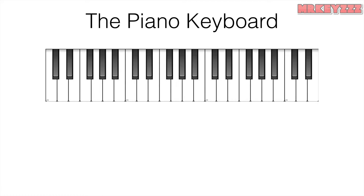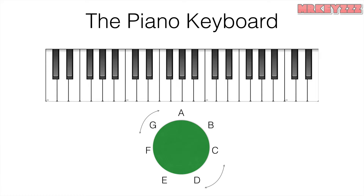The first thing that we need to learn is how to find notes on the piano. In the musical alphabet, we have seven letters, A through G. After G, they repeat again, which is why you see the notes drawn in a circle.